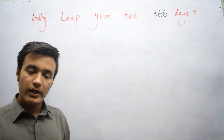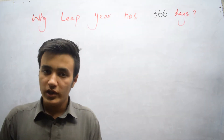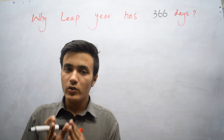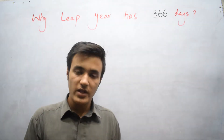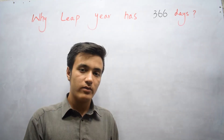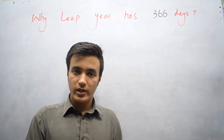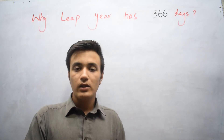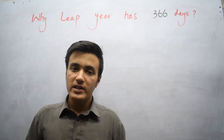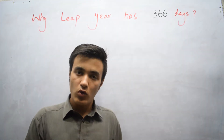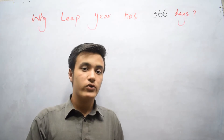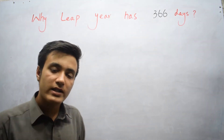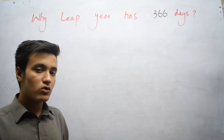For example, 2016 is also a leap year. A leap year is divisible by 4. So 2000, 2004, 2008, 2012 are all leap years, and 2016 and 2020 are also leap years.